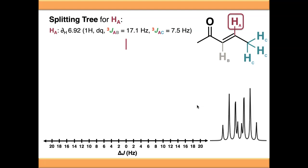If we make the situation a bit more complex - all I've done is shorten the molecule by one carbon so that HC is now an environment with three equivalent protons in it - you can see that the signal has got more complex. We're now starting to get into signals where you might look at them and think you can't really interpret what that is. So the splitting tree is going to allow us to work out what peaks have come from where and where our J values are in this signal.